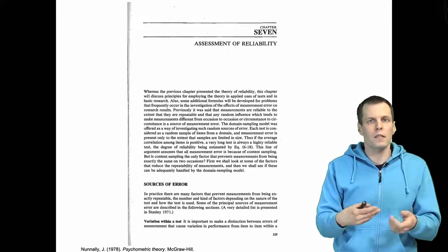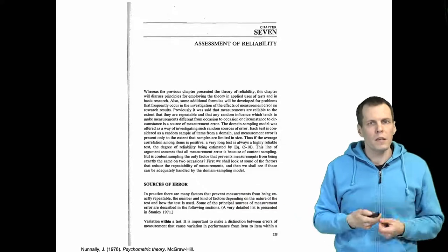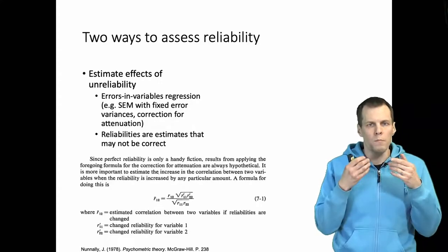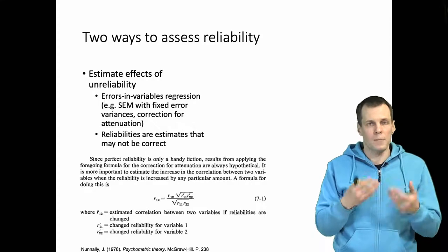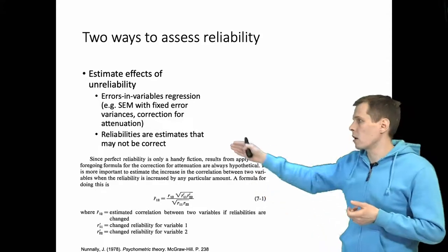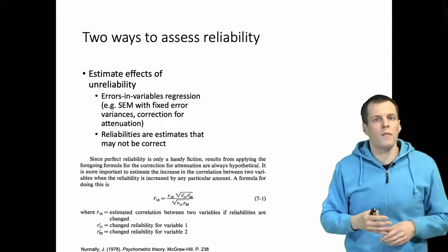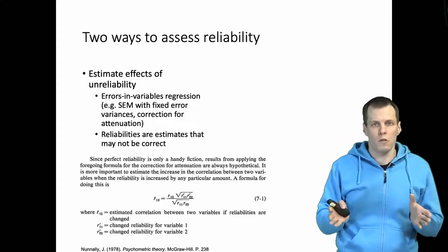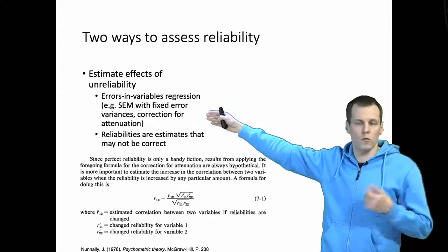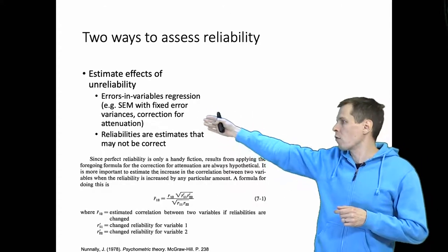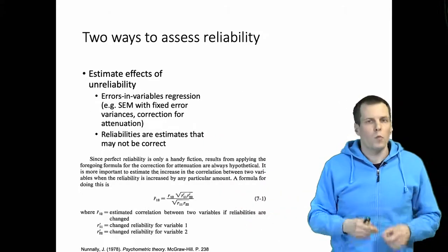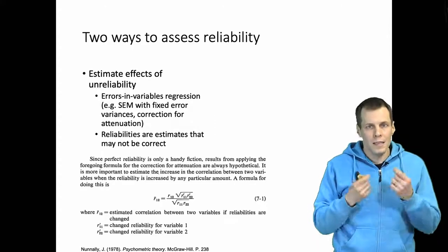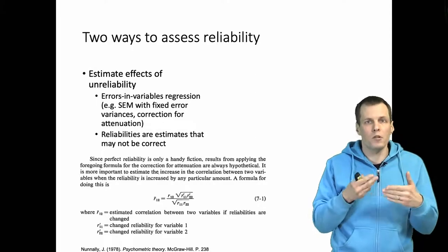There are basically two ways of assessing reliability. The first strategy is to estimate how much bias that low reliability is expected to have on your results. To do so, you can use errors-in-variables regression analysis. If you don't have statistical software that contains an errors-in-variables procedure, you can do that with structural equation modeling software by fixing the error variances to the reliability estimates, or correct correlations for attenuation using this formula here.